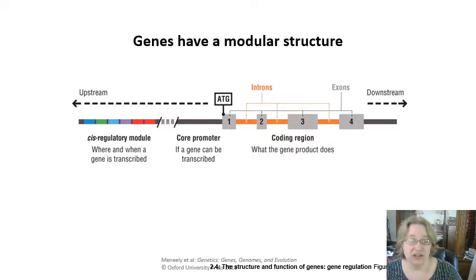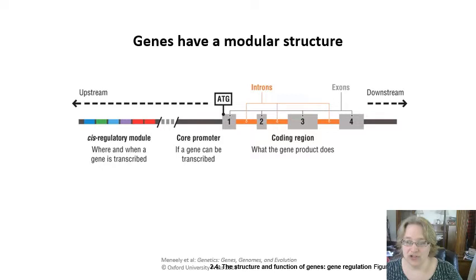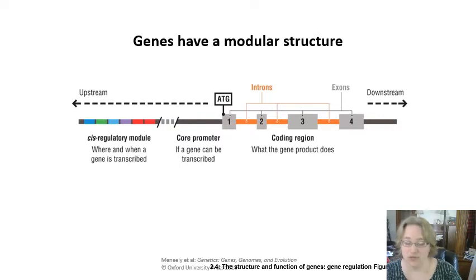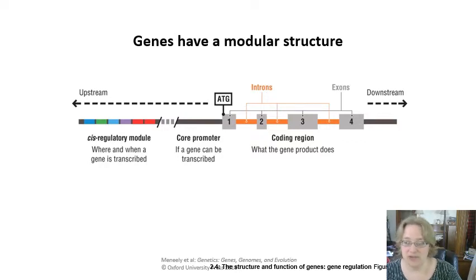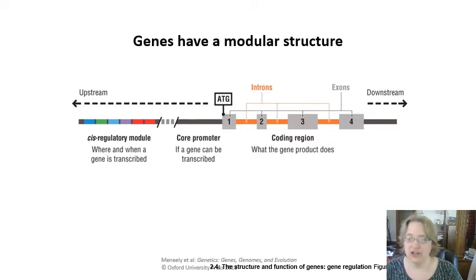ATG serves as the start codon for the coding region. You have your coding region where the exons are what gets expressed — 'X' for expressed — and the introns get cut out in post-transcriptional modification. Sometimes there's a terminator at the end, sometimes not. Downstream, along the three-prime end, is what comes after the gene.